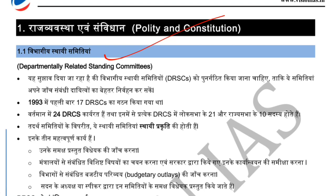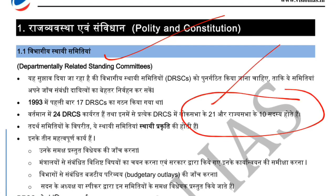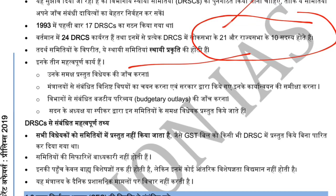In DRSCs, there are members from both Houses — you must remember that the composition is 21 members from Lok Sabha and 10 from Rajya Sabha, making 31 total per committee. There are some important differences to note: 15 and 7 or 10 and 10 — so 21 and 10-10. These are multiple members in DRSCs, with 3 people in some configurations. The same person in DRSC — a member cannot be part of more than one DRSC at the same time.